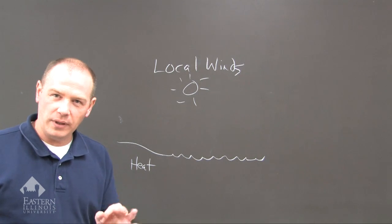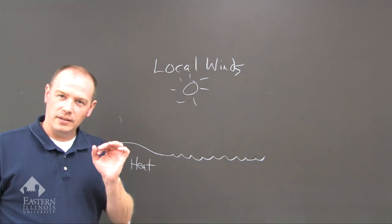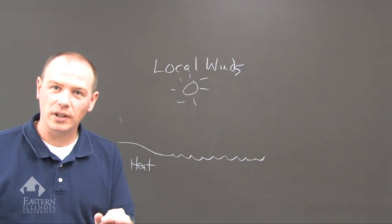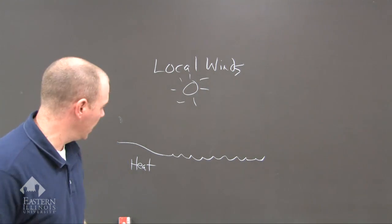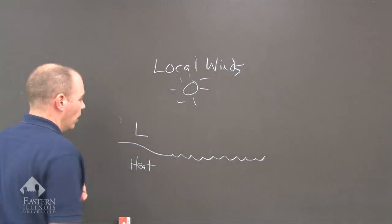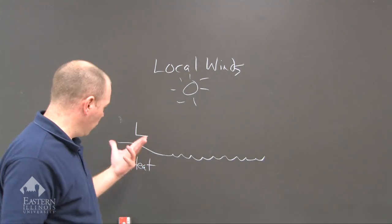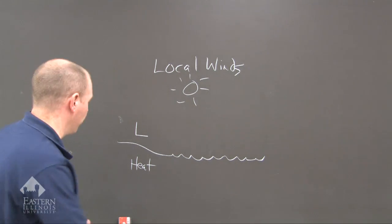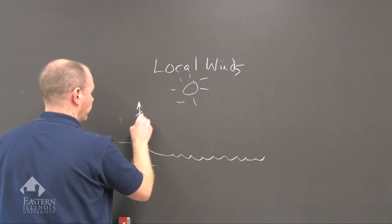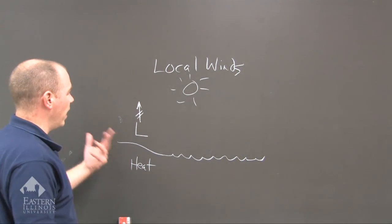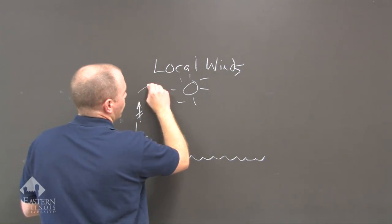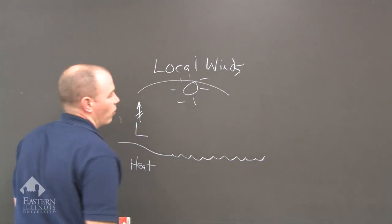We know from previous lectures that low pressure is the result of rising warm air. So with that, we've identified where the heat is — we put a low over the beach. With low pressure we get rising air, and then that air moves up, rises, and shifts over to the water.